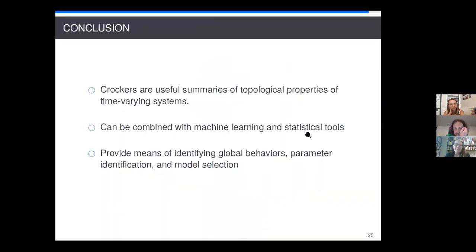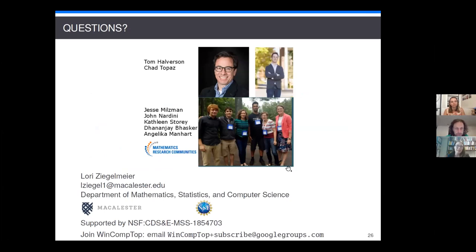So in conclusion, crockers are a way to understand topological properties of time varying systems, and they can be combined with machine learning and statistical tools. And they can identify global behaviors, parameter identification, or we've also done a paper where they can be used for model selection. Okay. And I just want to thank my wonderful collaborators. So, I mentioned Tom and Chad, the bulk of this talk was work that I did with a group of wonderful researchers through a mathematics research community. So if you don't know of these, I encourage you to look into these MRCs. They're great opportunities. So thank you.